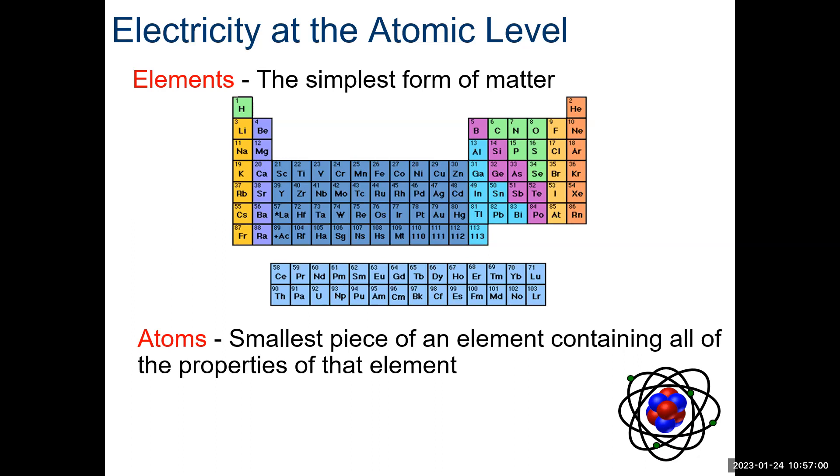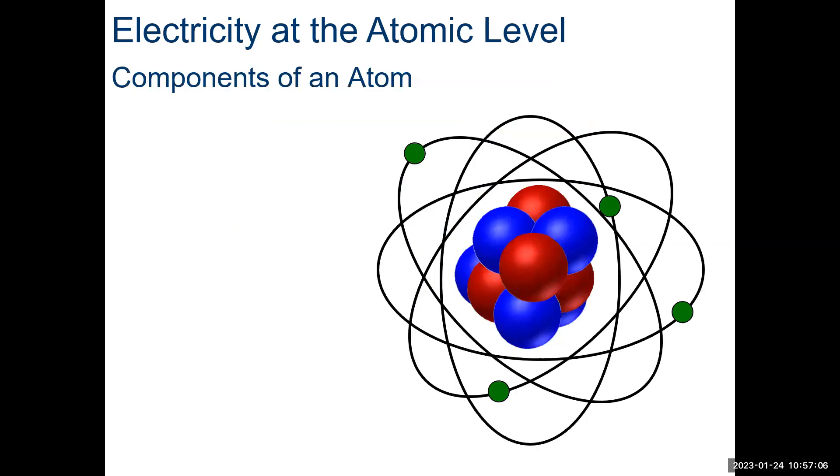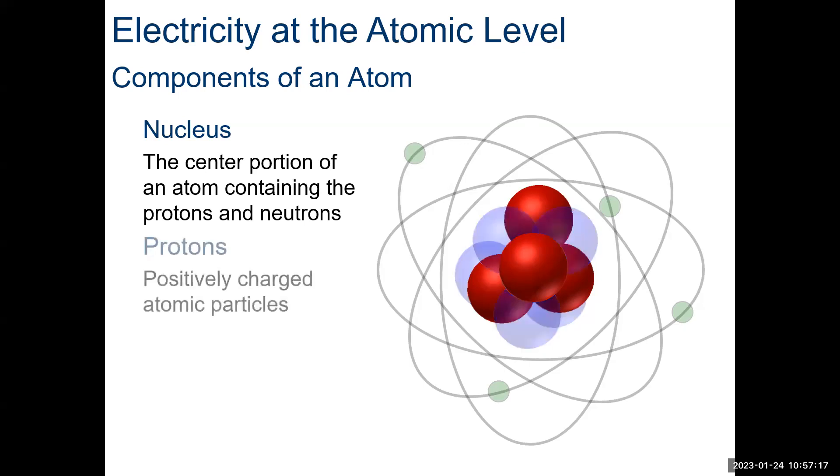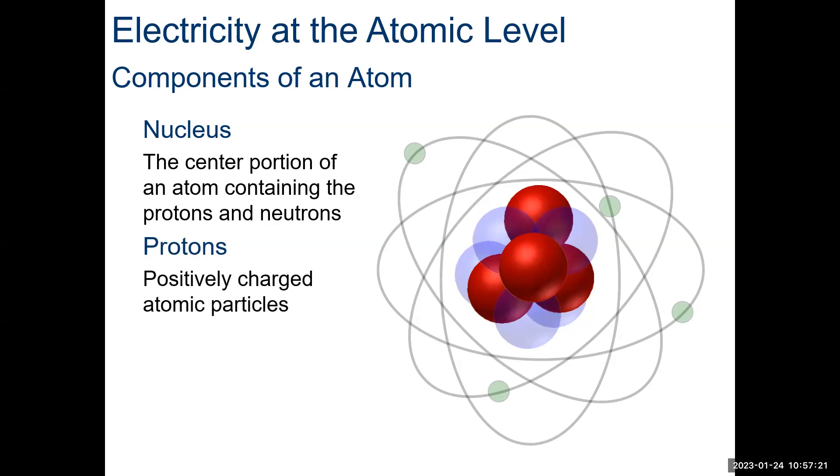This is important because with electricity, we have conductors and non-conductors, and we should know why. Components of an atom: we have the nucleus, that's the inside center portion of the atom, protons and neutrons. Protons are the positively charged ones, that's the red ones, and then the neutrons are the uncharged, so they're not negative, they're just uncharged particles.